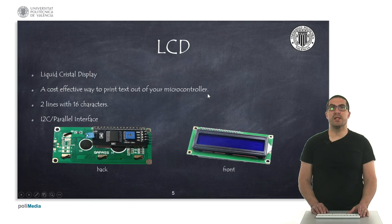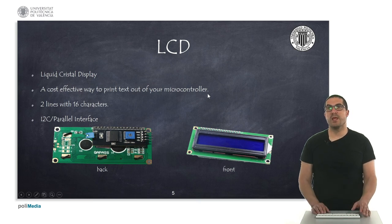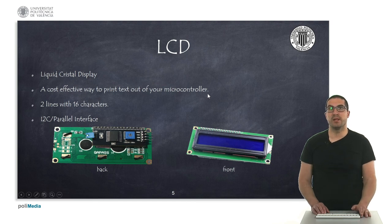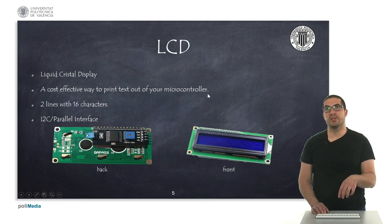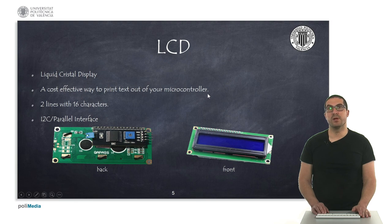Then we have the LCD display — it's a liquid crystal display and a very cost-effective way to print text from our microcontroller. These displays have two lines and are able to print up to 16 characters per line. They have a parallel interface, but there are circuits with an I2C-to-parallel interface, as you can see in the figure, so we can save some pins on our microcontroller.